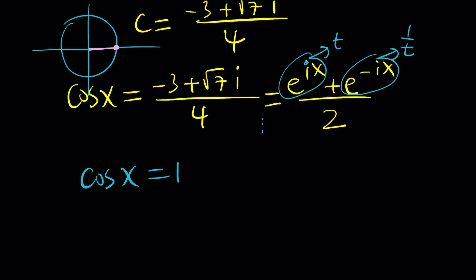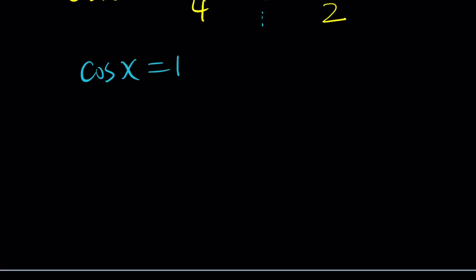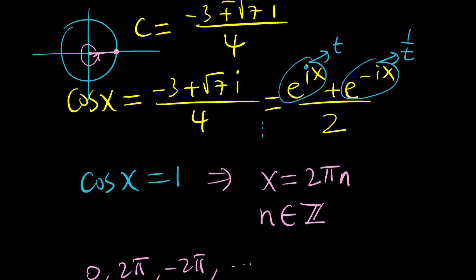But wait a minute, is 0 the only solution? Nope, because this is periodic. You can just add 2 pi. In other words, x can be any multiple of 2 pi. So we can basically write this as 2 pi n, where n is an integer. So 0 is a solution, 2 pi is a solution, as well as negative 2 pi and so on and so forth. All these are solutions. And that's pretty much it with the first method.